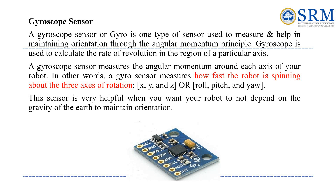A gyroscope sensor acts like a compass for a robot, helping it understand and maintain its orientation using the principle of angular momentum. It measures how quickly the robot is spinning around different axes, like turning left or right. This sensor is particularly useful when you want the robot to stay oriented without relying on Earth's gravity.